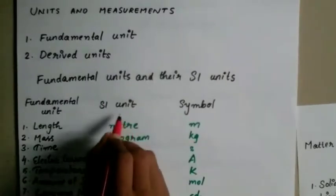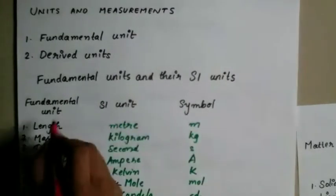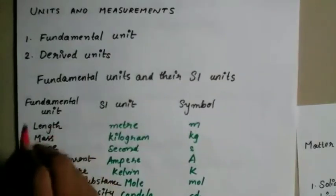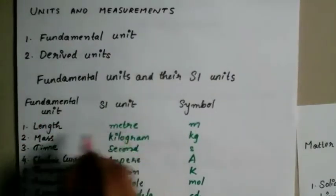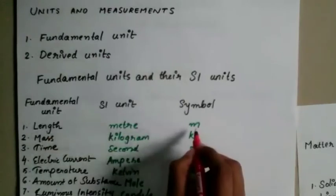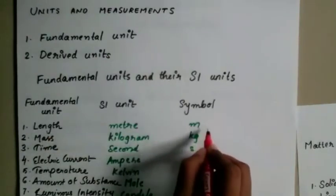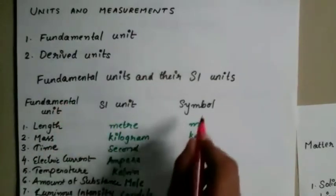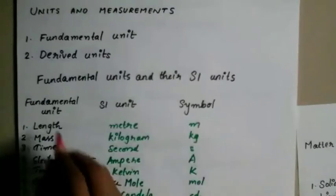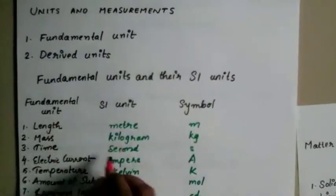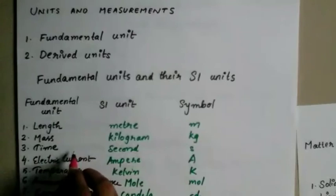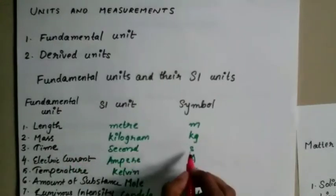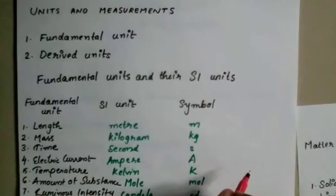The SI unit symbol for length, a fundamental unit, is meter (m). Mass has SI unit kilogram (kg). Time is a fundamental unit with SI unit second (s). Electric current has SI unit ampere (A).